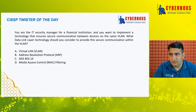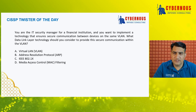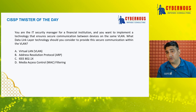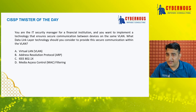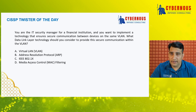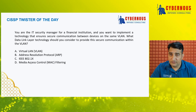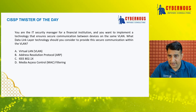Option C is IEEE 802.1X, also called Network Access Control. This is the technology implemented in almost every organization nowadays to make sure that only authorized devices are able to connect to your network. Once only authorized devices are connecting, this supports secure communication, so out of the given options, C is the best answer.